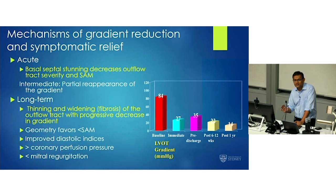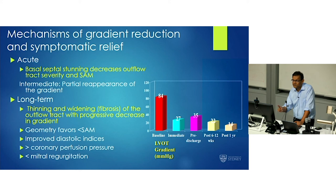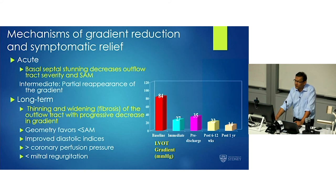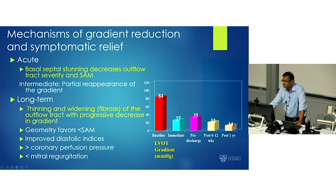In the acute phase, you get basal septal stunning, which decreases outflow tract severity and the SAM. In the intermediate phase, that disappears and you get a partial increase in gradient, which is expected. What you're looking for long-term is thinning, widening, and fibrosis of the outflow tract with progressive decrease in the gradient. Our experience at Toronto General Hospital with 30 patients shows the immediate drop in gradient, a slight rise, and then a progressive drop-off as widening occurs long-term.